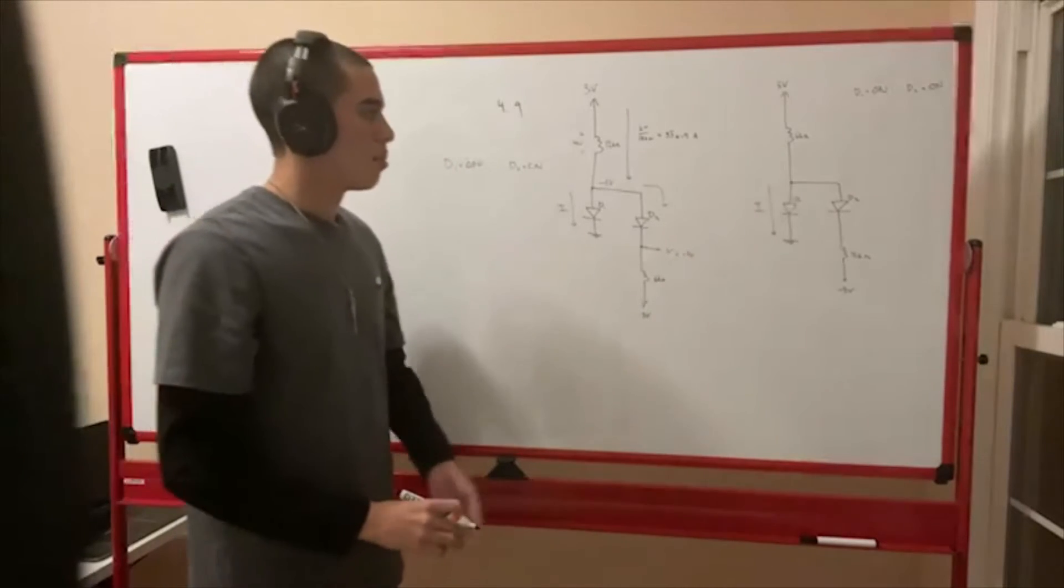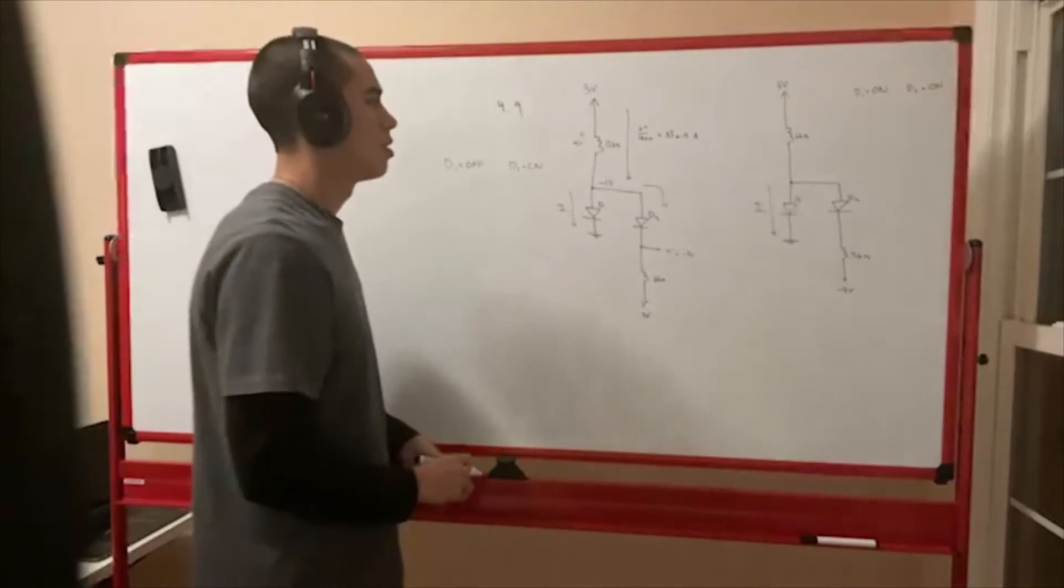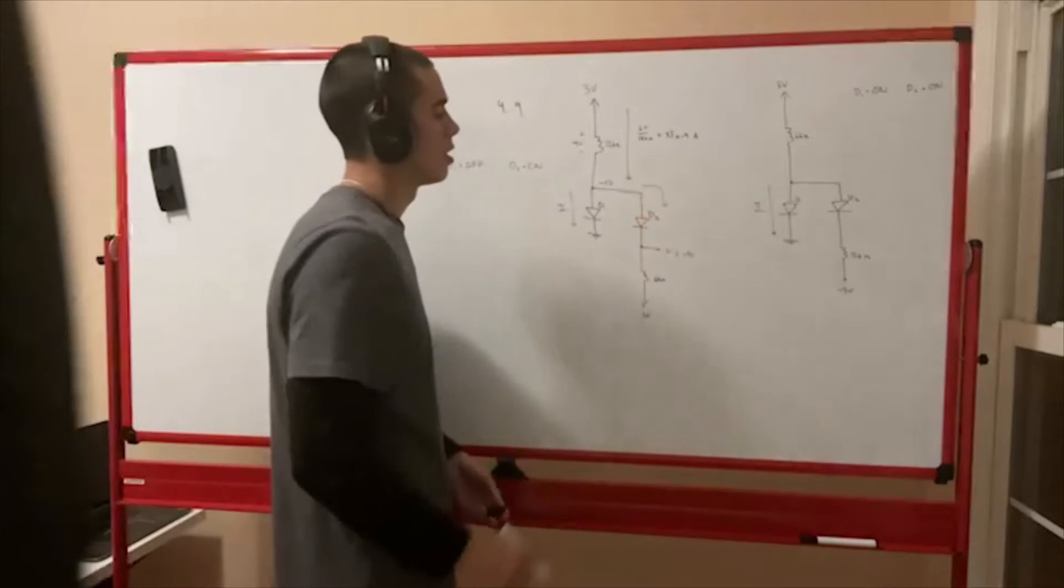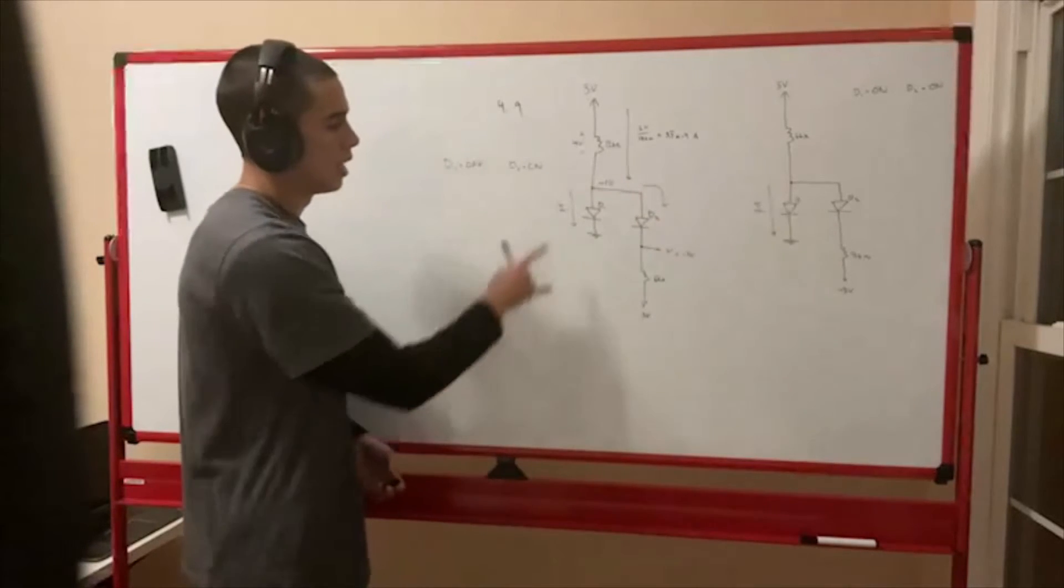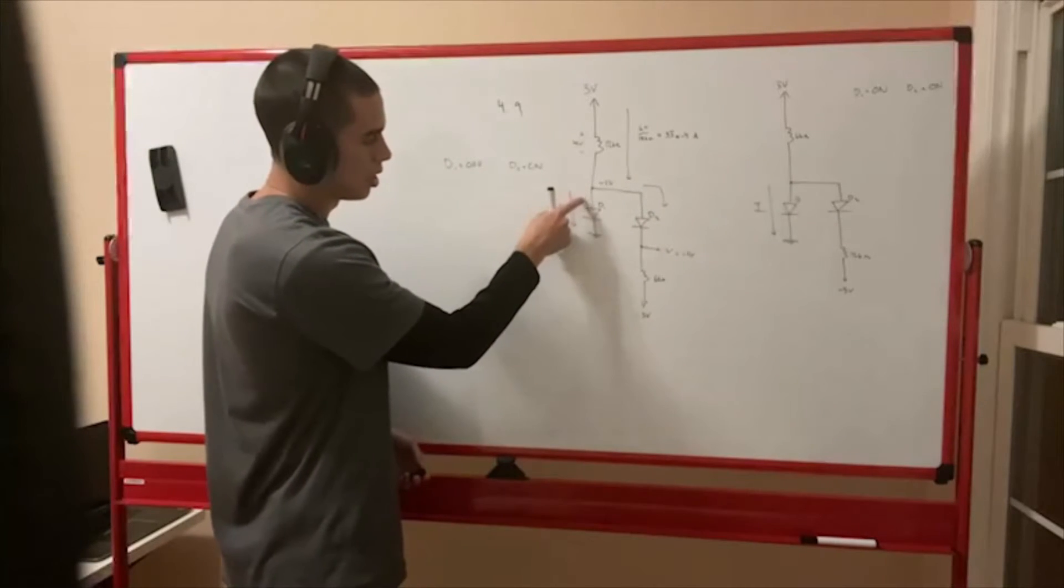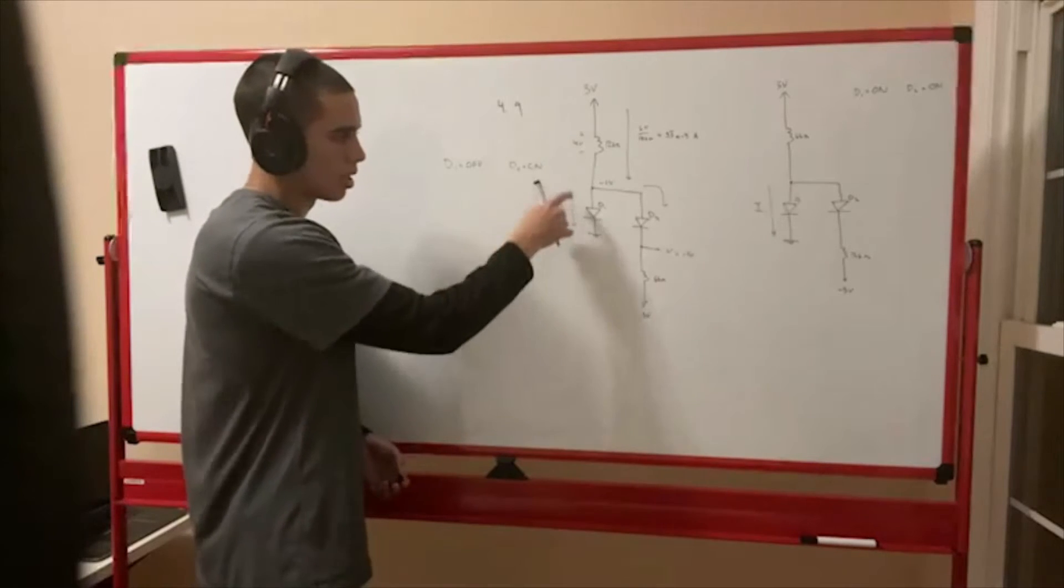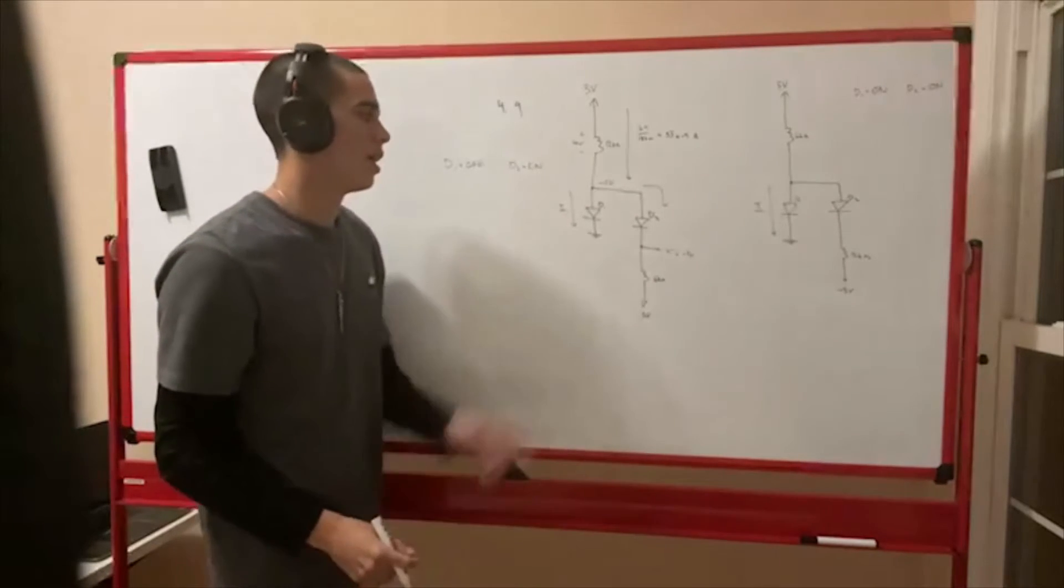And that lines up with the operation of an ideal diode. This is conducting forward. It's a short, no problem. And this has a negative voltage here, so it wouldn't be conducting in that way. And that works out.